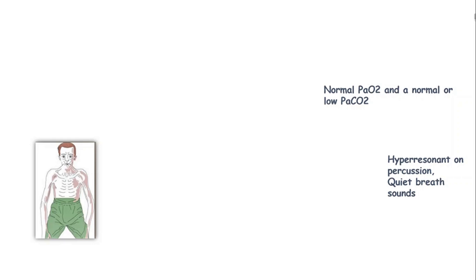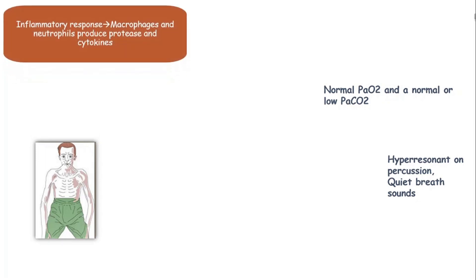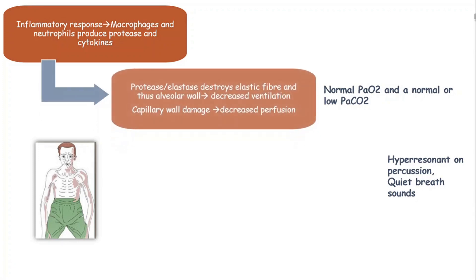Now, let's take the same journey in an emphysema patient or a pink puffer. We know that there is inflammation happening in the airways as a result of which macrophages and neutrophils produce enzymes like protease and other cytokines. Enzymes like protease and elastase later destroy the elastic fibers and the alveolar wall. They also damage the pulmonary capillary wall resulting in decreased ventilation and perfusion from the alveolus to the blood and vice versa.